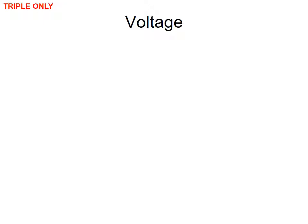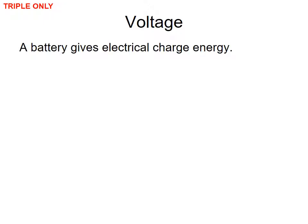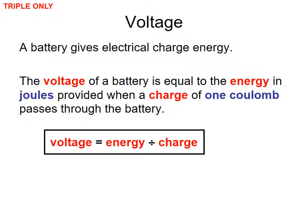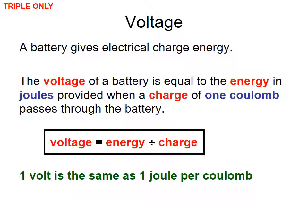Now we're going to look at voltage. A battery gives electrical charge energy — the energy it requires to do work in order to power light bulbs, sound systems, and so on. The voltage of a battery equals the energy in joules provided when a charge of one coulomb passes through it. So voltage equals energy divided by charge, and one volt is the same as one joule per coulomb.